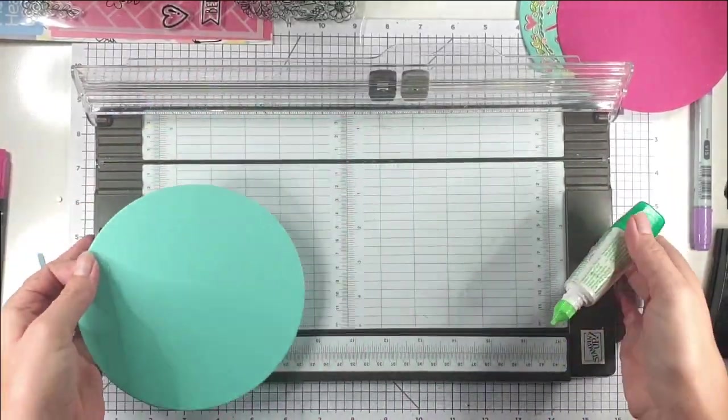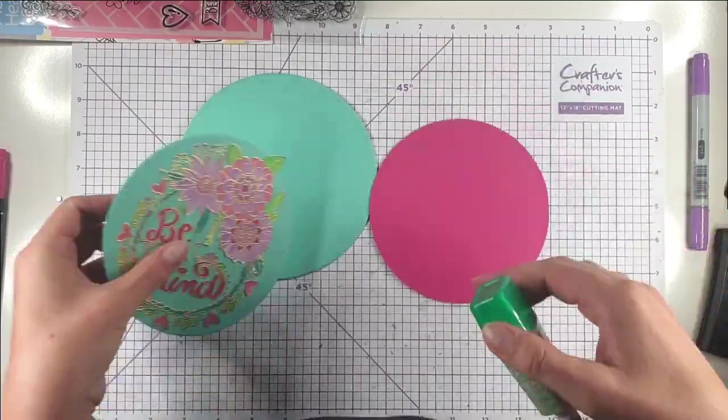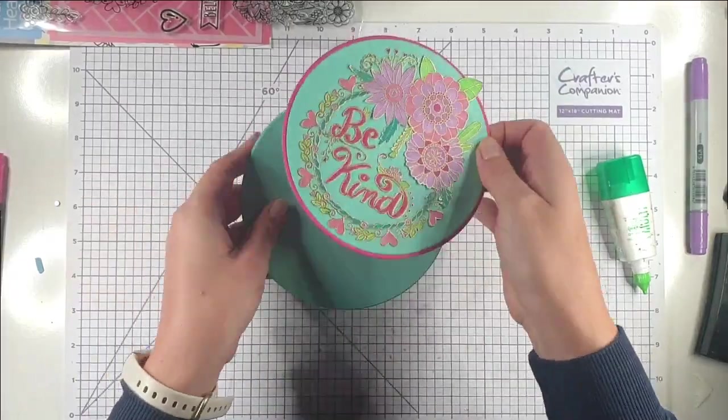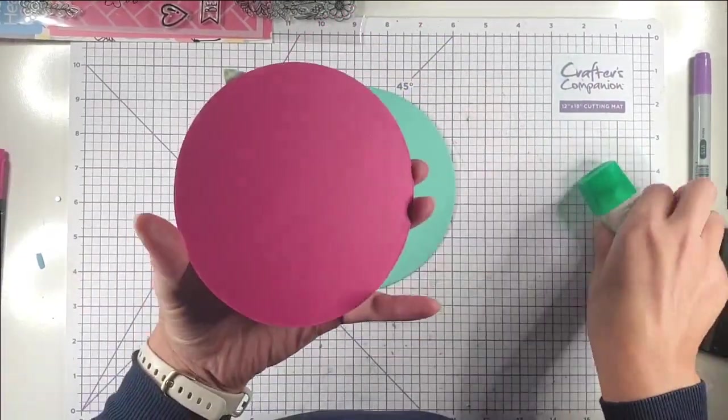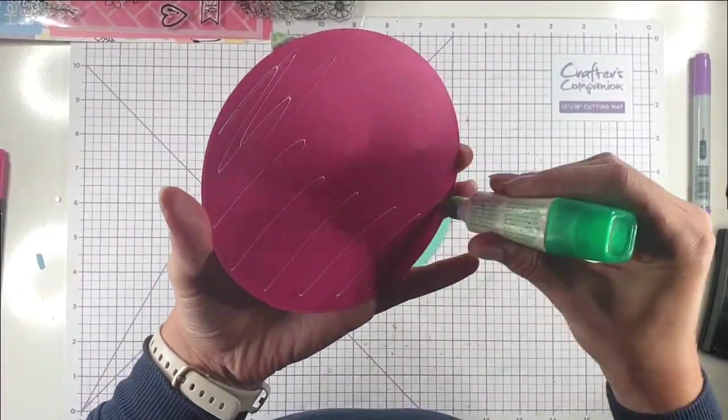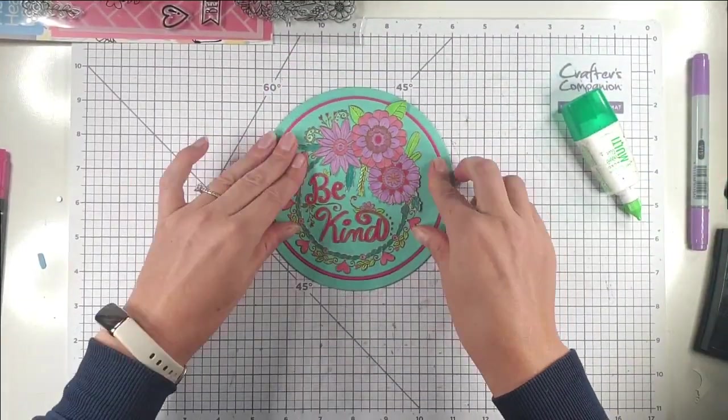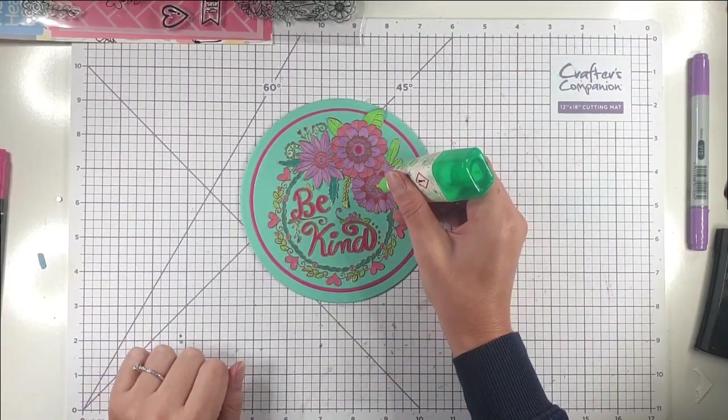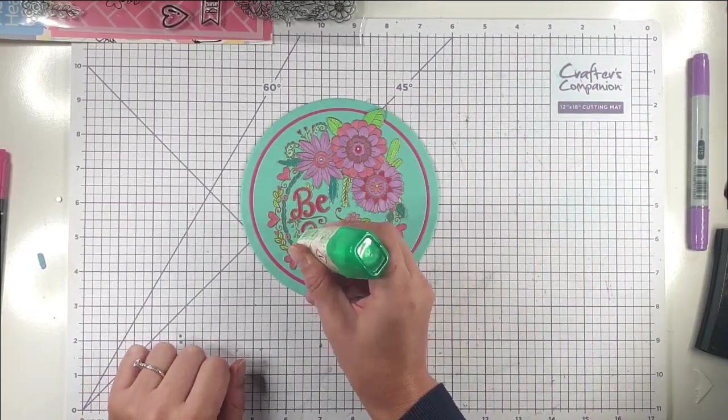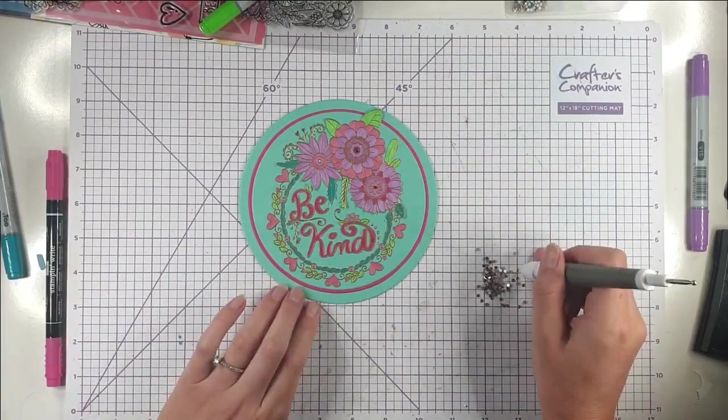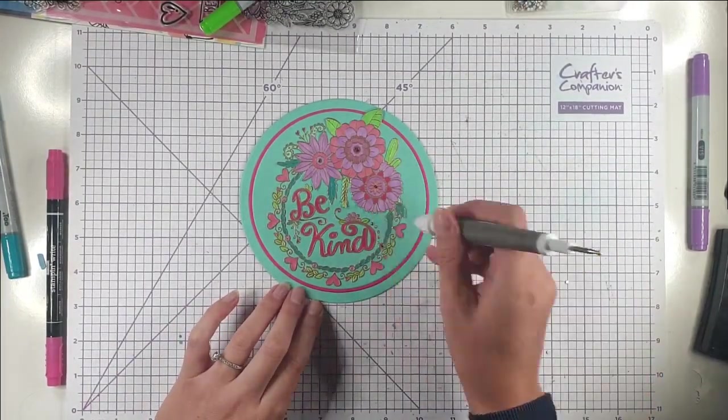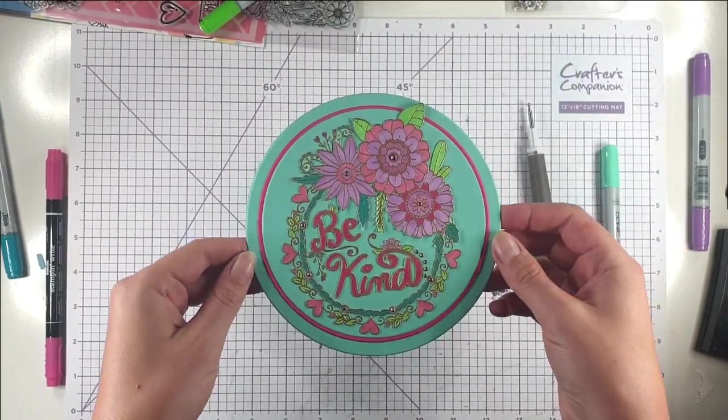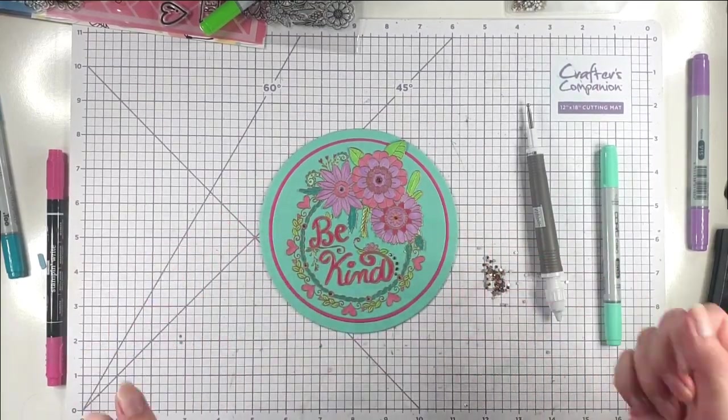That's our card blank and I can layer these pieces on top. I'm just going to finish off by adding a few gold gems. So we've got this gorgeous card as our first card and that'll fit into a six by six envelope.